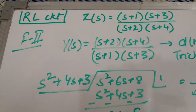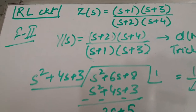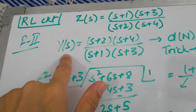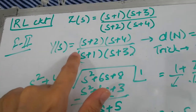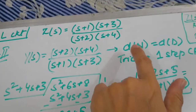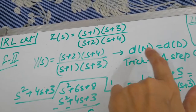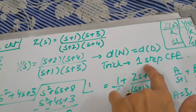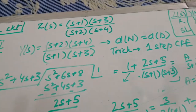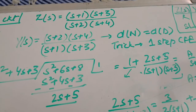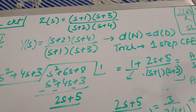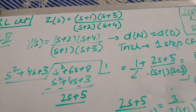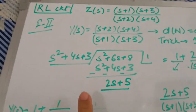Now we move on to the Foster 2 form for designing our RL circuit. As we already know, for Foster 2 form we have to take the partial fractions of the function Y(s). In Y(s) also, the degree of the denominator is equal to the degree of the numerator, but here we have to do one-step CFE. Like in the RC circuit we did one-step CFE for Foster 1, in the RL circuit we have to go for one-step CFE in our Foster 2 form — this we should all keep in mind.